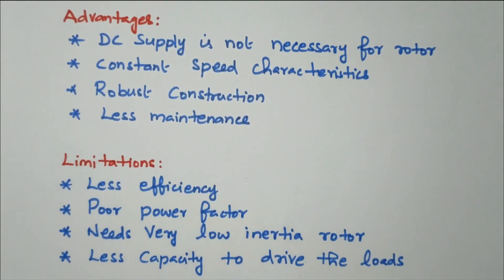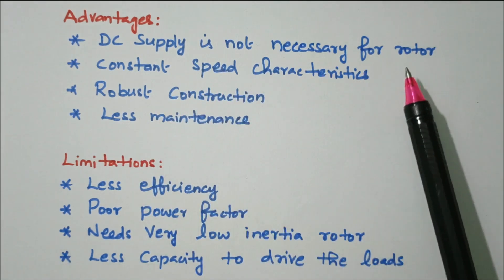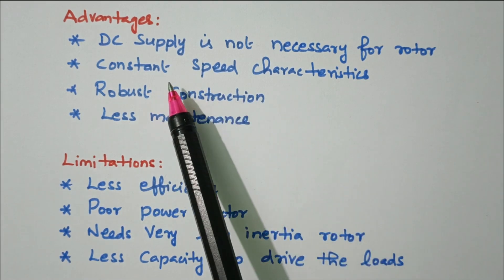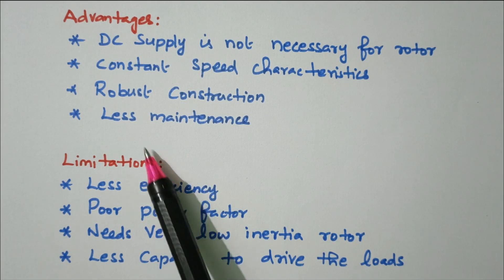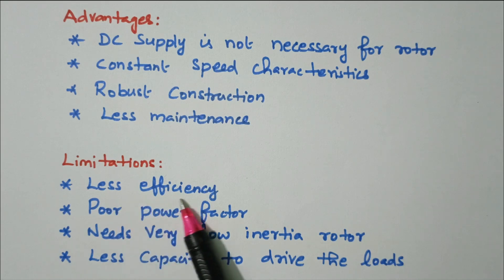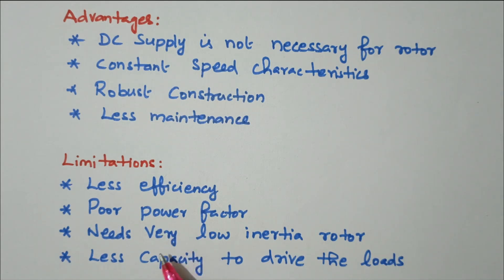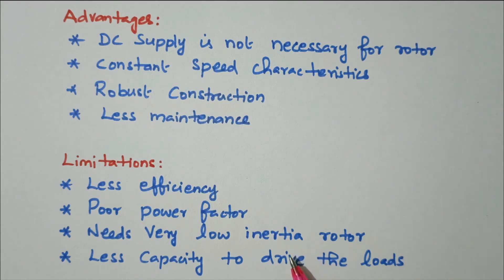Now we'll see the advantages and disadvantages. Advantages: DC supply is not necessary for the rotor; constant speed characteristics since it runs at synchronous speed; robust construction; less maintenance since there is no commutator. Disadvantages: efficiency is less; poor power factor due to the lagging and the torque angle between stator and rotor; needs very low inertia rotor so it cannot be made in large sizes; less capacity to drive loads, so it is only used for low-power-rated applications.